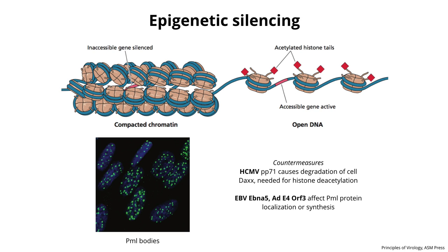This is a brilliant strategy—but viruses overcome it too. For example, human cytomegalovirus protein PP71 degrades a cell protein called DAX that is needed for histone deacetylation, so the DNA remains acetylated and transcriptionally active. Epstein-Barr virus and adenovirus proteins affect the localization and synthesis of PML bodies, antagonizing their formation. So if a virus is successful, it has overcome epigenetic silencing by either interfering with histone deacetylation or the formation of PML bodies.